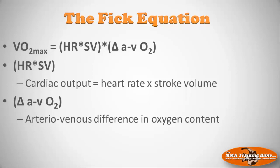Let's unpack these terms. The first term is cardiac output — heart rate multiplied by stroke volume. Cardiac output defines the amount of blood being pumped from your heart per minute. It's influenced by how many times your heart beats per minute, which is your heart rate, and also by the amount of blood pumped out with each beat, which is called stroke volume, abbreviated SV. Together these give you cardiac output, a very useful indicator in exercise physiology.